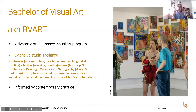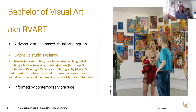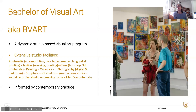For each year level, we have 1,000 level, 2,000 and 3,000 level courses. You can take these different level courses across different years of your study, but they indicate introductory, intermediate and capstone courses. We've got amazing facilities here across print, textiles, glass, painting, ceramics, photography and sculpture. We also have two VR studios, a green screen studio, sound recording, a screening room and Mac computer labs. Our program is also informed by contemporary practice and what that might mean.